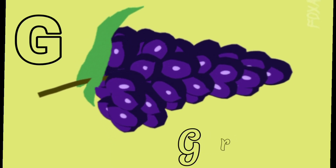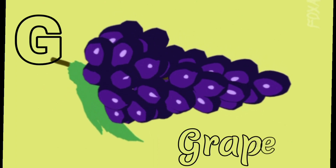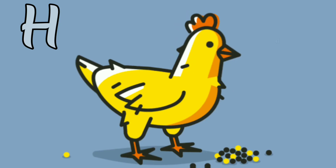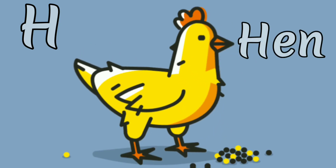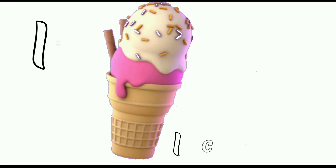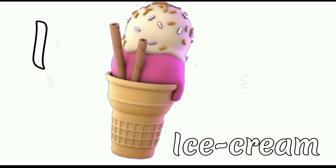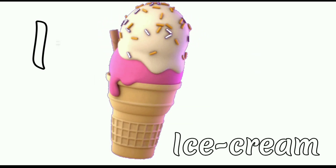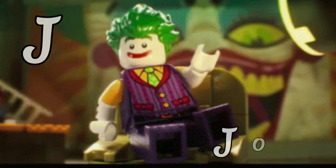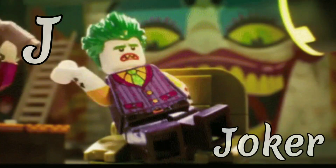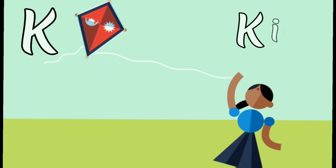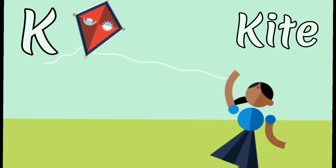D for grapes. H for hen. I for ice cream. J for joker. K for kite.